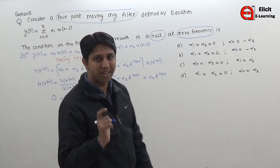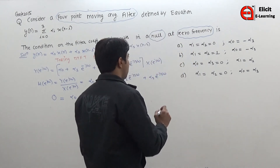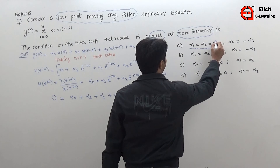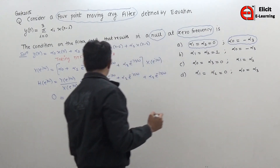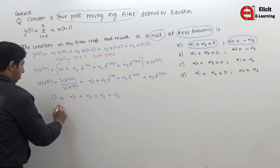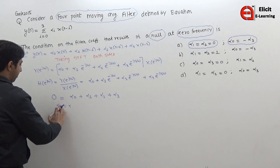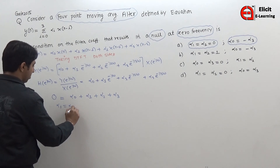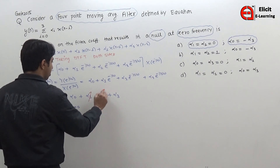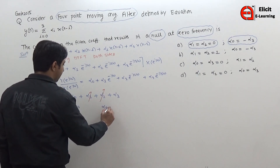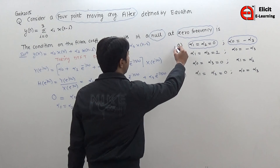Let us check Option A first. It says: take α₁ = 0 and α₂ = 0. If we substitute α₁ = 0 and α₂ = 0 into the condition α₀ + α₁ + α₂ + α₃ = 0, then α₀ + α₃ = 0, which means α₀ = −α₃. So Option A is satisfied and is the correct answer.